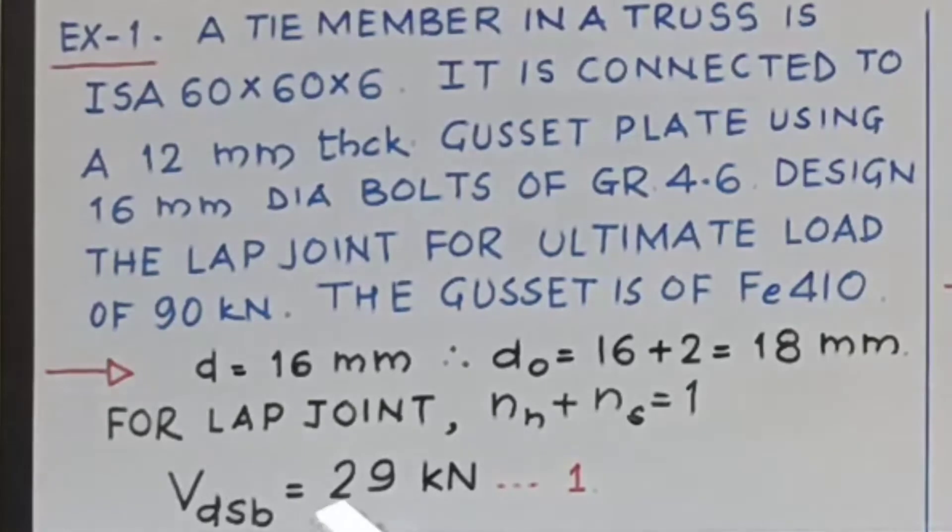Now as usual, find out VDSB. I have written direct value of VDSB. How do we calculate VDSB? FUB into bracket NN into ANB plus NS into ASB bracket complete divided by root 3 into gamma MB.